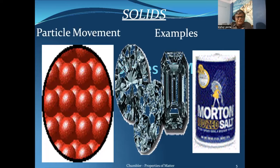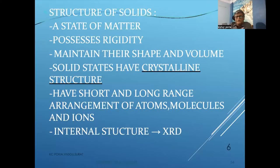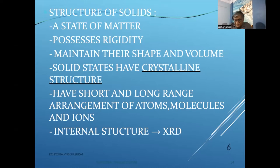This is the arrangement of atoms in the case of solids — all atoms are very closely spaced. Examples include salt and diamond. Solids possess rigidity, maintain their shape and volume, and have crystalline structures. The solid state is classified into different classes. They have short and long range arrangement of atoms, molecules, and ions. X-ray diffraction is the primary tool to understand the structure of the crystalline state.